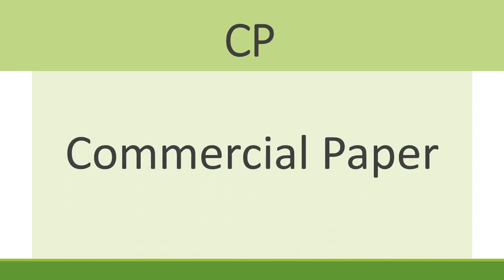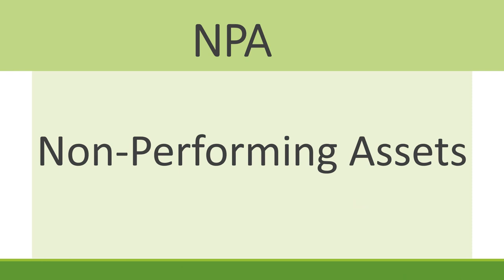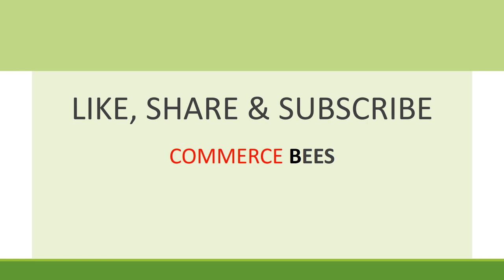The next term is CP. The full form of CP is Commercial Paper. The next term is NPA. The full form of NPA is Non-Performing Assets. The next term is YTM. The full form of YTM is Yield to Maturity. If you liked today's video, then share it with your friends and don't forget to subscribe to CommerceBees.